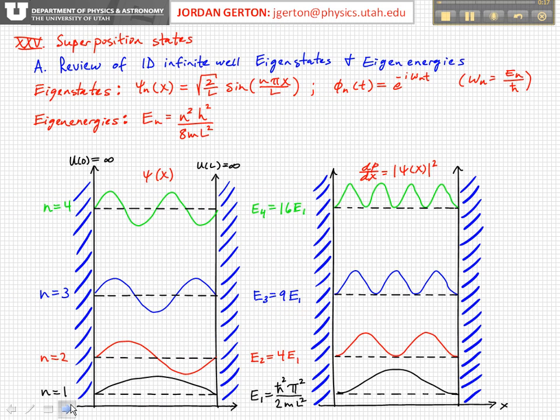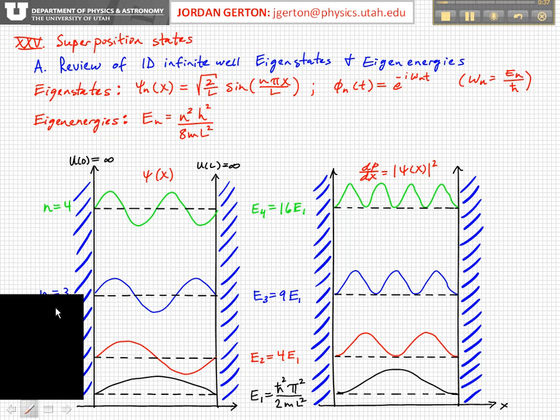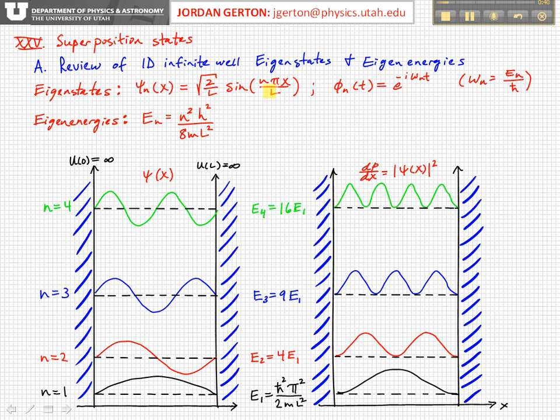So let's review the 1D infinite potential well, in particular the eigenstates and eigenenergies. I've written down the expressions for the eigenstates, the ψ_n's. Remember we did the normalization. And so we have √(2/L) sin(nπx/L). N is an integer that goes from 1 to infinity. And L is the size of this 1D potential, the length of the box. And this is the time independent part, so the spatial part of the wave function.